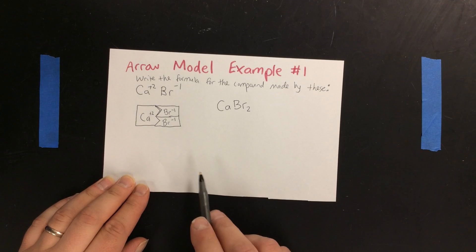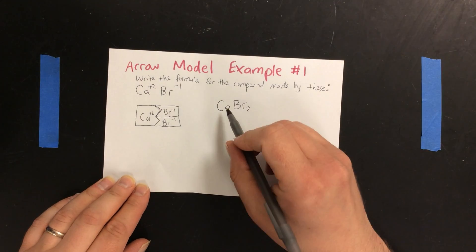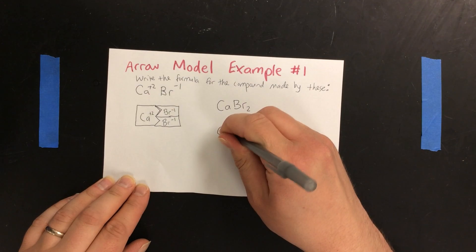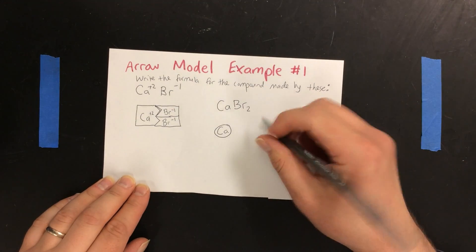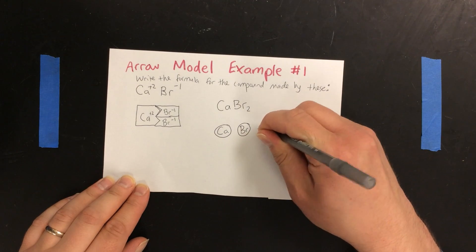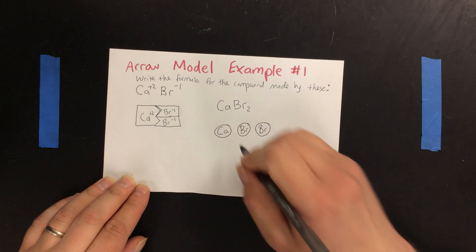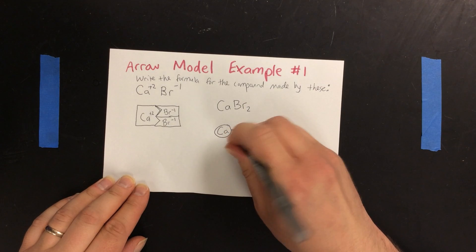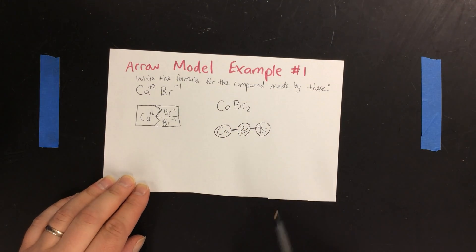Another way of representing this is to use a circle model. Since we have one calcium, I make one calcium atom. We have two bromine atoms. Here's the first, here's the second. Because these are all bonded together into one molecule, I connect them like this.